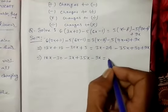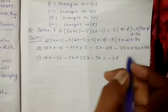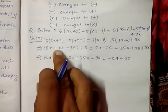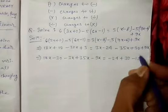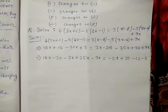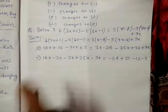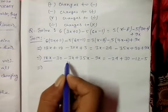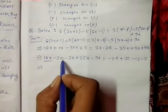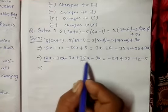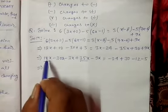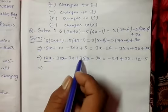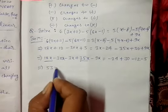Now combining like terms. The plus terms: 18x, 30x, 3x, 35x gives 53x. The minus terms: 9x, 3x, 12x, 30x gives 42x. So 53x minus 42x equals 11x. On the right side: minus 12, minus 5, minus 24, plus 30 equals minus 11.